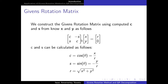Given a vector with elements X and Y, we can compute our cos θ, which is our C, and our sin θ, which is our S. Our cos θ is computed as X over R, and our sin θ is computed as negative Y over R, where R is the length — the norm — of the vector. Having obtained C and S, we substitute them into the Givens rotation matrix.